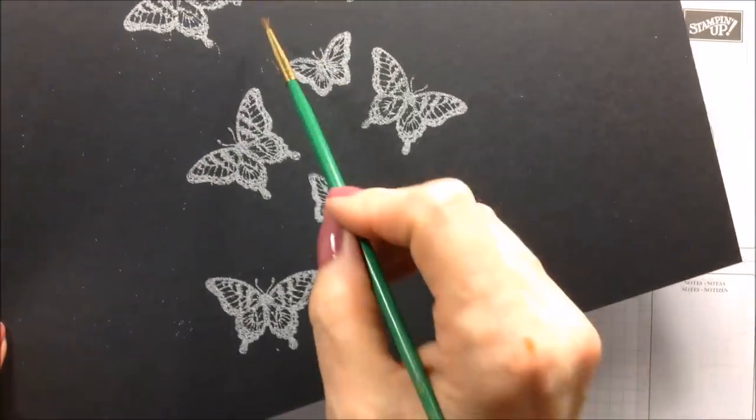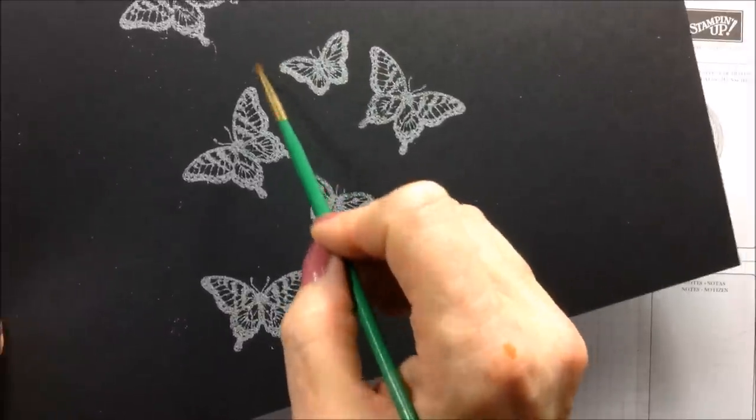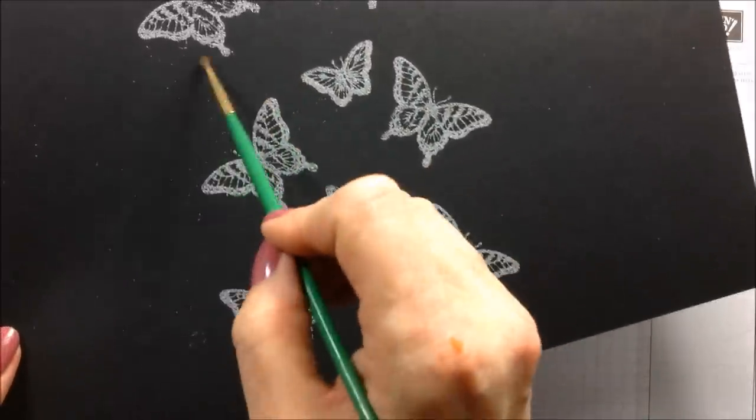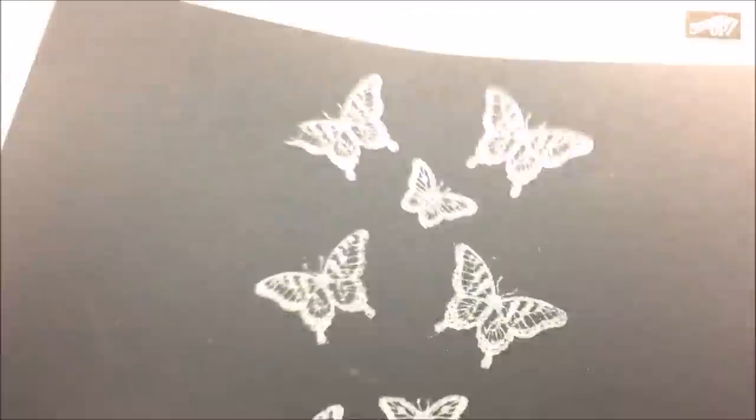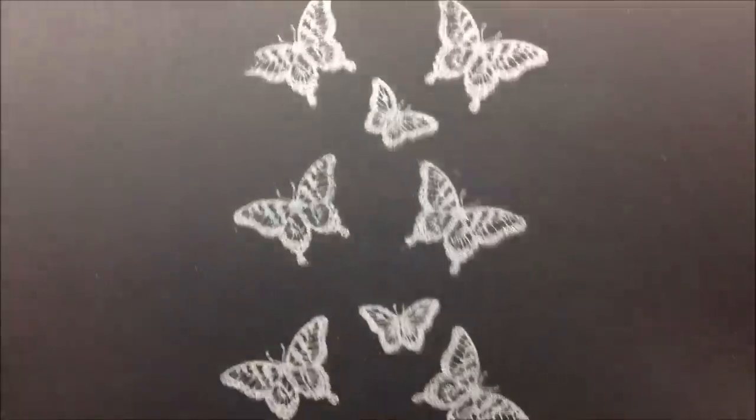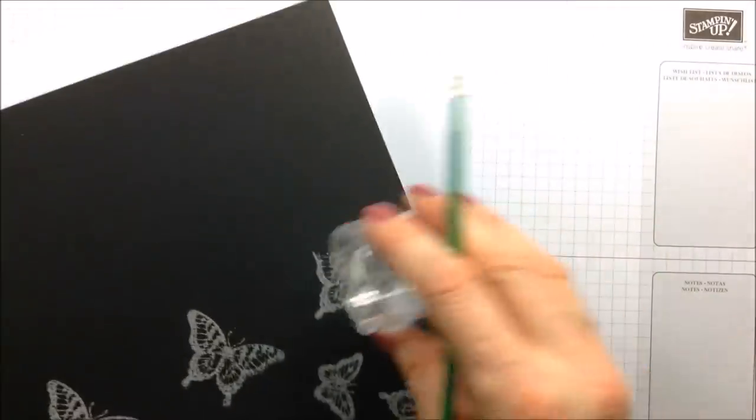You can also see there are some areas where powder has stuck where I don't want it to, so I'm just going to go around now and tidy up my stamped images. I'm going to heat emboss those now using my heat tool.